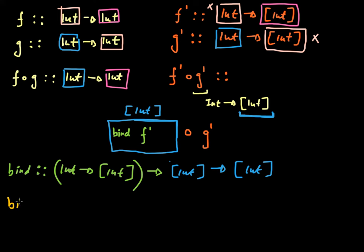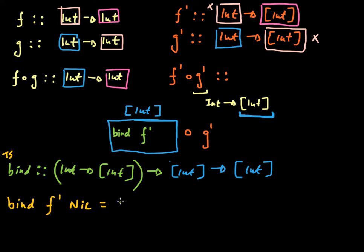The implementation of the bind method is as follows. It takes as an input some function f prime and some value that happens to be a list of integers. Now using pattern matching, I can say: if this list of integers happens to be nil — empty — I'm just going to use nil to represent that empty list, and I'm going to give you back as an output another list of integers that also happens to be empty.